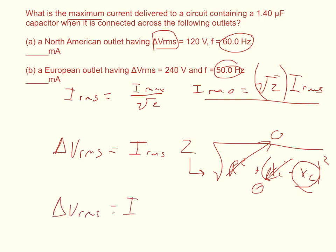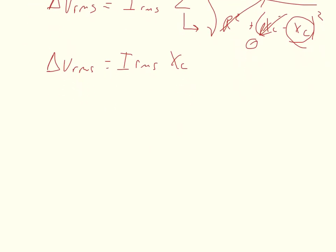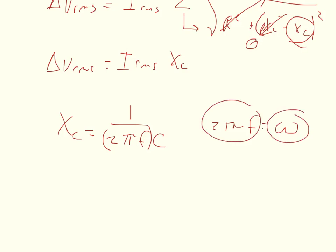Now the capacitive reactance XC is derived from 1 over 2 pi times the frequency times the capacitance. So just to point out real quick, 2 pi times frequency is equal to the angular speed. So if it were to give us the angular speed and not the frequency we could just substitute angular speed times the capacitance.